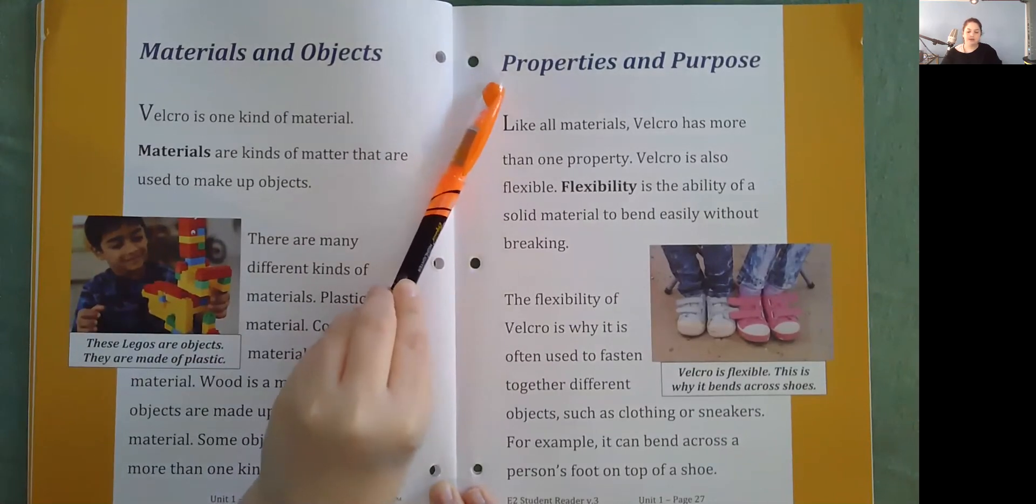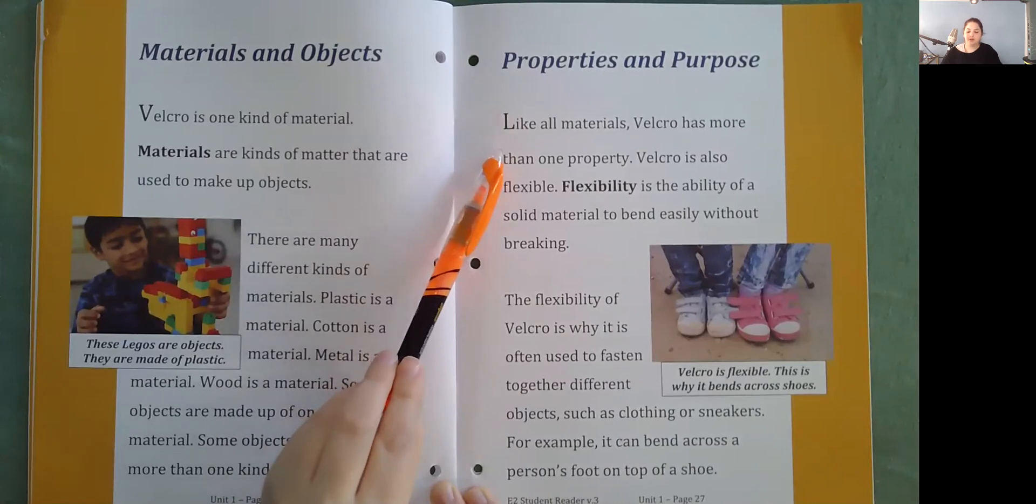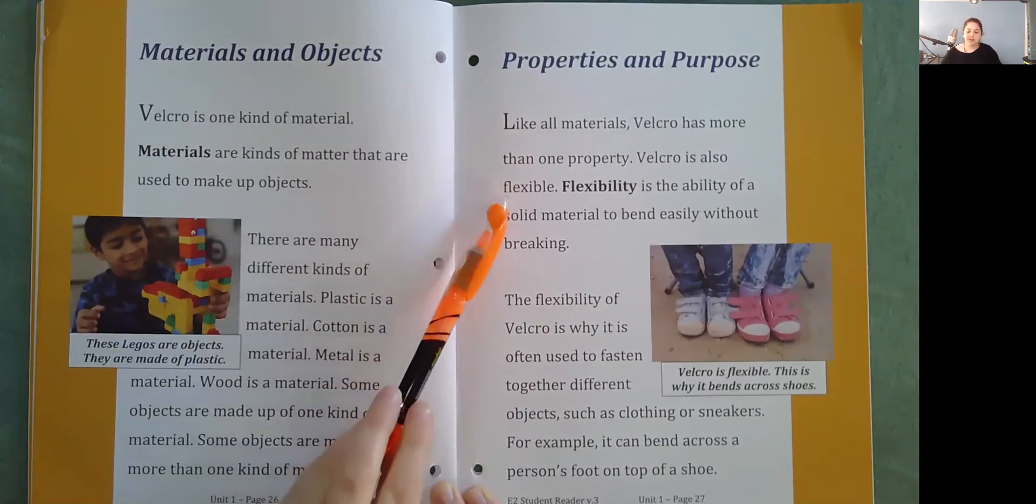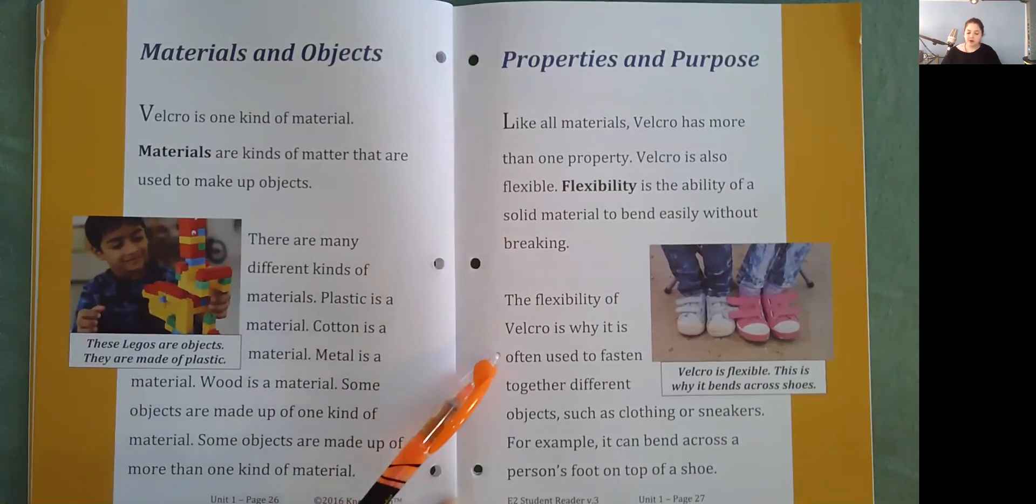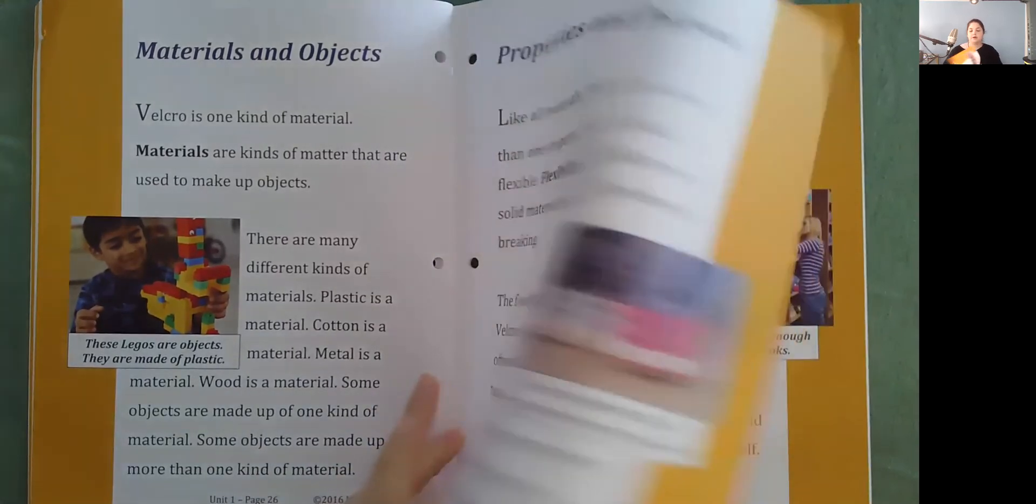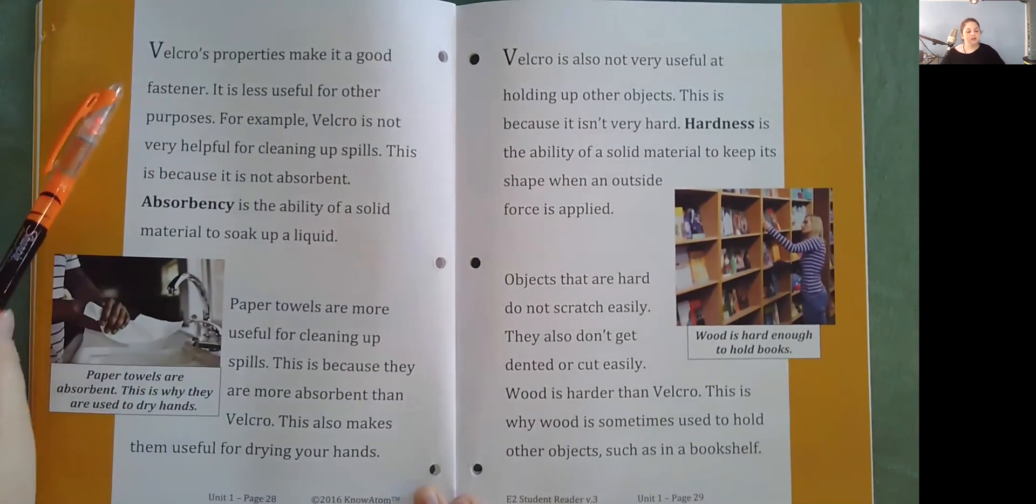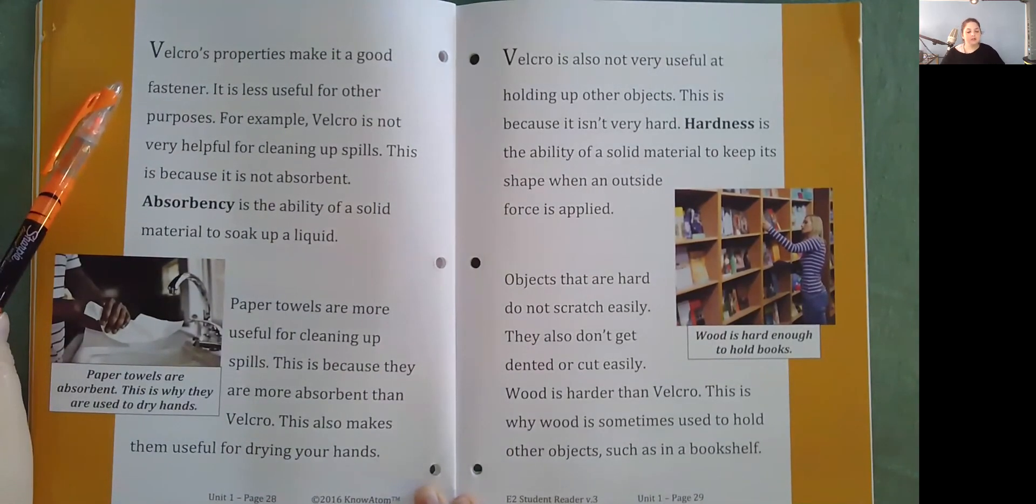Properties and purpose. Like all materials, Velcro has more than one property. Velcro is also flexible. Flexibility is the ability of a solid material to bend easily without breaking. The flexibility of Velcro is why it is often used to fasten together different objects such as clothing or sneakers. For example, it can bend across a person's foot on top of a shoe.